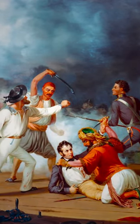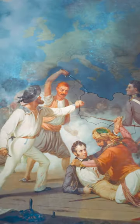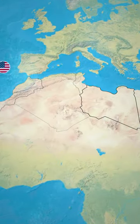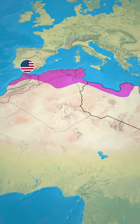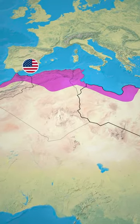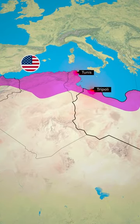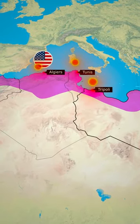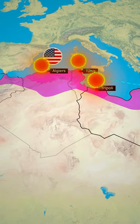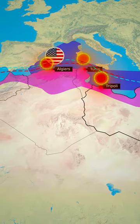The Barbary Wars were a series of conflicts in the early 19th century between the United States and the Barbary States of North Africa. These Barbary States, which included Tripoli, Tunis, and Algiers, were known for their piracy and extortion of Western ships passing through the Mediterranean.